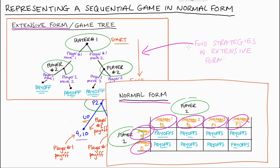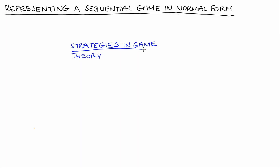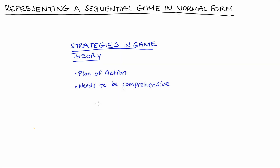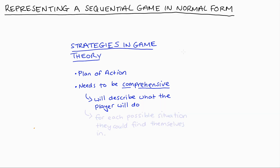The first thing to think about is how we can find our players' strategies from an extensive form representation. In game theory, a player's strategy, broadly speaking, is a plan of action for the game — it describes what the player will do. This plan needs to be a comprehensive one. In a sequential game in extensive form, our players' strategies need to describe what each player will do for each possible situation they could find themselves in. Our strategies need to cover all contingencies.